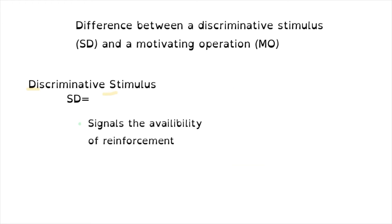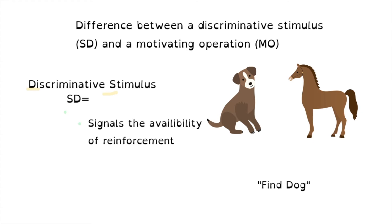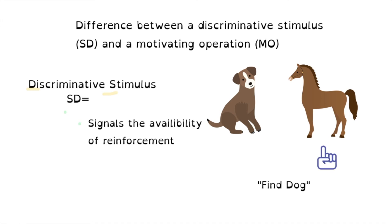So the SD signals the availability of reinforcement. We have learned that in the presence of certain stimuli we will be reinforced, whether it's escaping or avoiding something like negative reinforcement, or whether it's gaining something that we like — positive reinforcement. When we stop at a red light we avoid an accident or a ticket. When we ask a client to identify the dog and they select the dog correctly, we will praise and say nice job, you got it right. Now what happens if they chose the horse? They wouldn't receive the same level of reinforcement — we may have some procedure in place to try it again, but they will only access reinforcement in the correct example.